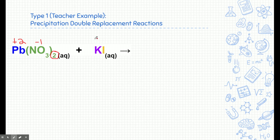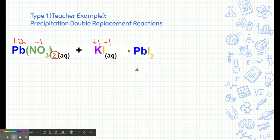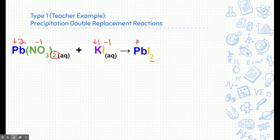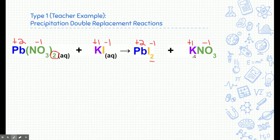In a double replacement reaction, these partnerships switch — positive always goes with negative. So lead goes with iodine. Lead is still +2 and iodine is still -1, so there have to be two iodines, giving lead(II) iodide, PbI₂. Potassium now goes with nitrate — potassium is +1 and nitrate is -1, so there's one of each, giving potassium nitrate, KNO₃.